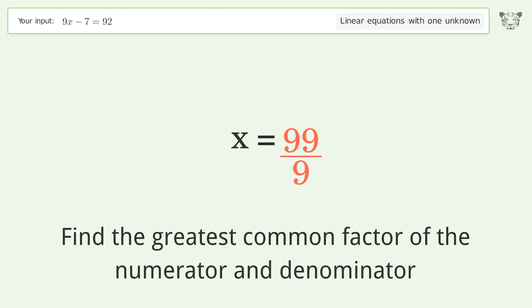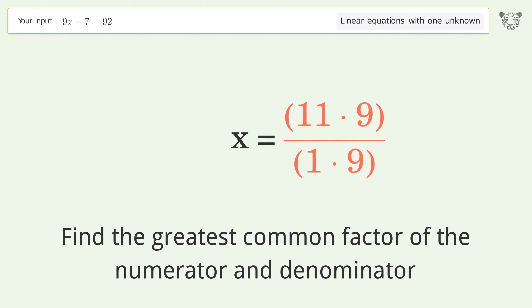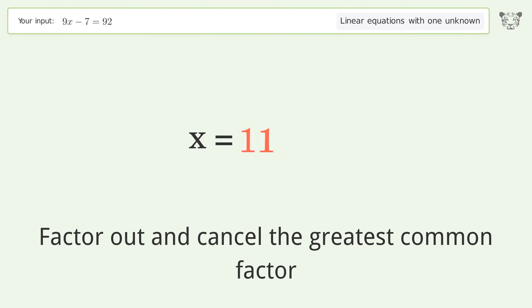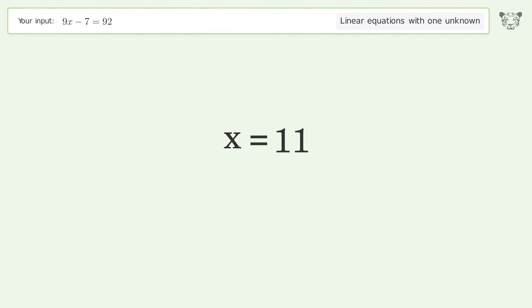Find the greatest common factor of the numerator and denominator, then factor out and cancel the greatest common factor. And so the final result is x equals 11.